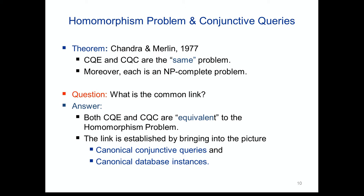To establish this link, we need two concepts: the canonical conjunctive query and the canonical database instance. The idea is that a conjunctive query is a syntactic object, but we can view it as a database. Conversely, when we have a database, we can see a conjunctive query. For those familiar with mathematical logic, this is the passage from a relational structure to the existential positive diagram of the structure.